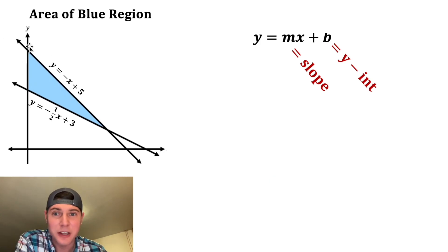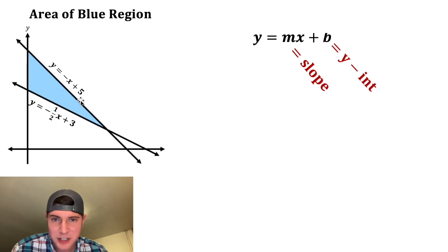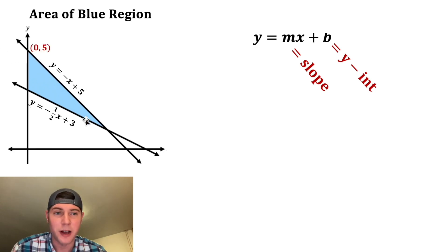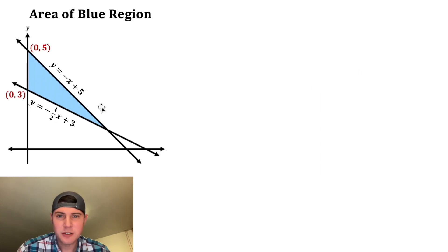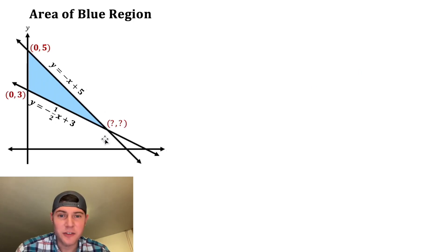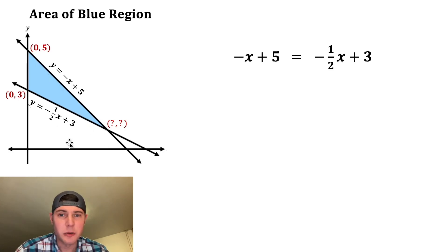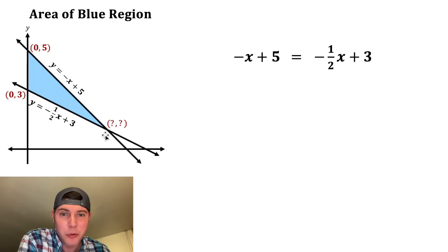Now let's use our equations to find the y-intercepts. This top equation has a y-intercept of 5, so this point is going to be (0, 5). And for this equation the y-intercept is 3, so this vertex is located at (0, 3). Now that we have these two vertices, let's find the third one. The best way to do that is to set these two equations equal to each other, and that will tell us the x and y point where they're both equal.